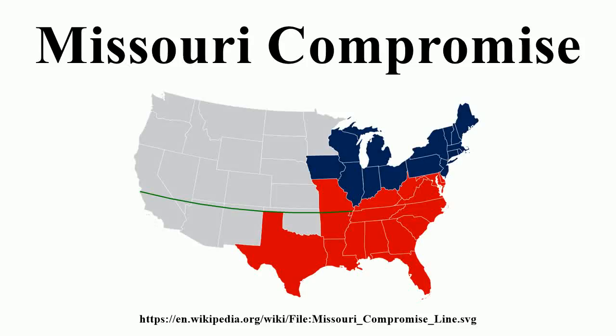The Missouri Compromise was a United States federal statute devised by Henry Clay. It regulated slavery in the country's western territories by prohibiting the practice in the former Louisiana Territory north of the parallel 36 degrees 30 north, except within the boundaries of the proposed state of Missouri. The compromise was agreed to by both the pro-slavery and anti-slavery factions in the United States Congress and passed as a law in 1820.